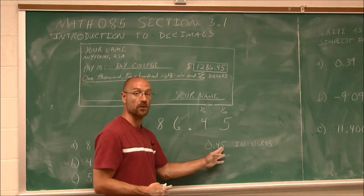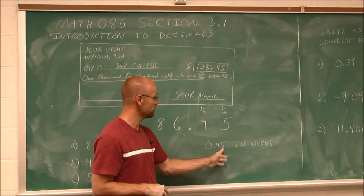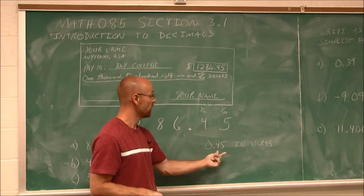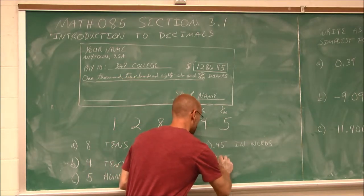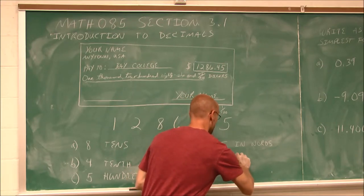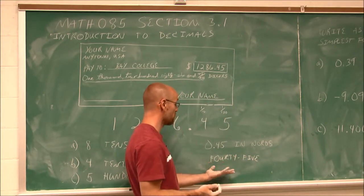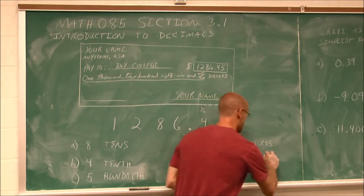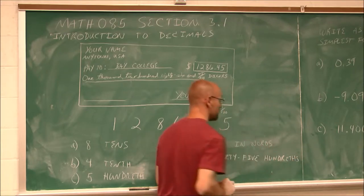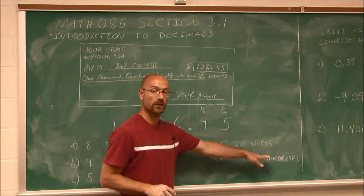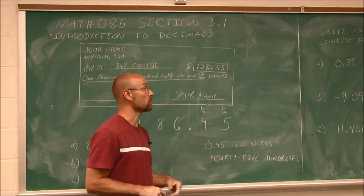45 — what place value is that last non-zero digit in? Well, that's in the hundredths. So we would call this 45 hundredths. We write it out as 45, just like the normal number 45, and qualify it by writing hundredths — 45 hundredths. So it's very important to know your place values when you work with decimals.